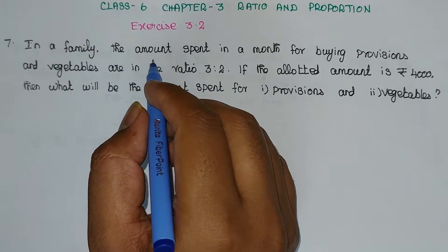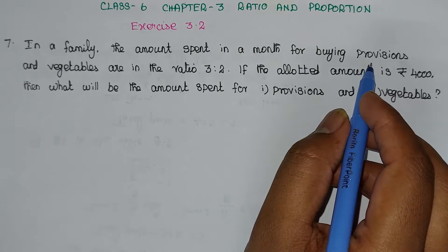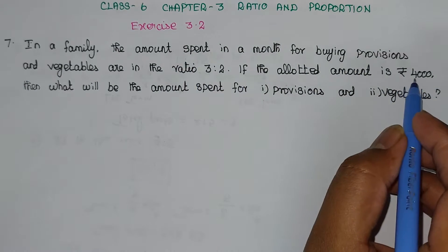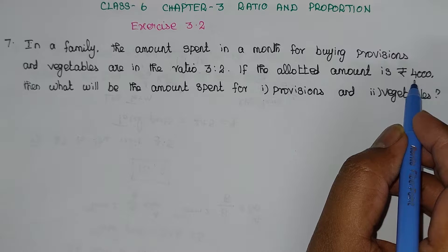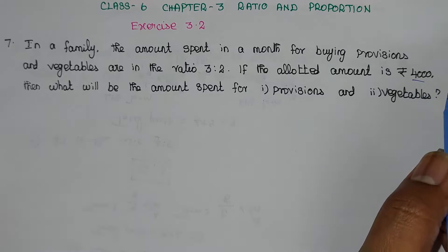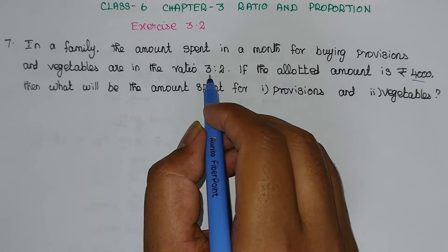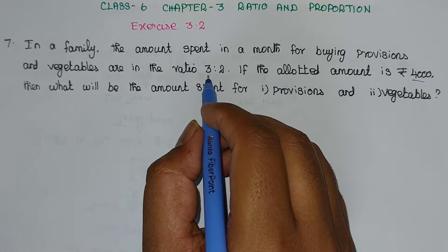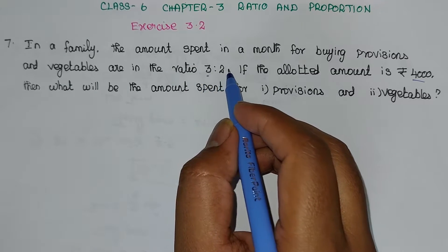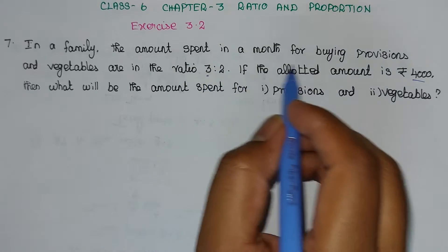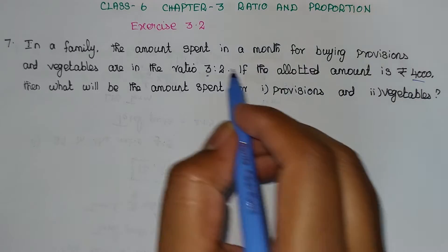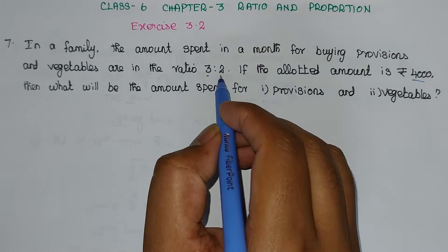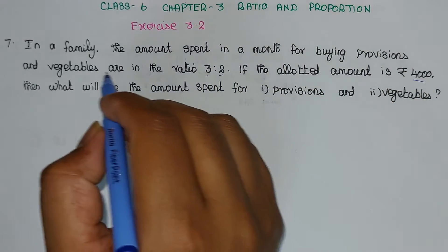One family — provisions and vegetables for the month, Rs. 4000 allocated. The provisions and vegetables are in the ratio 3 is to 2. In the amount of 4000, there are 3 parts of provisions and 2 parts of vegetables.